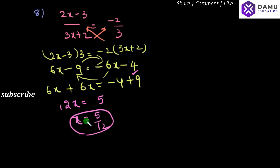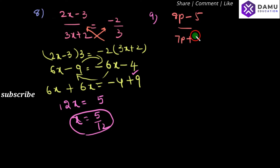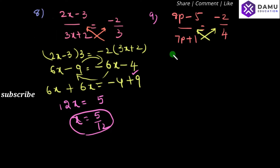So, x is 5 by 12. Next, our 9th question. The 9th question is: 8p minus 5 by 7p plus 1 will be equal to minus 2 by 4. Here also, the same thing we have to do — first we have to do cross multiplication. So, first you have to do cross multiplication. What will come? 8p minus 5 into 4 will be equal to minus 2 into 7p plus 1.